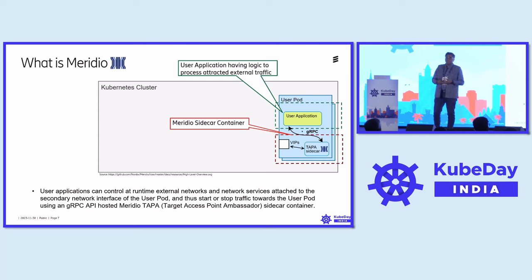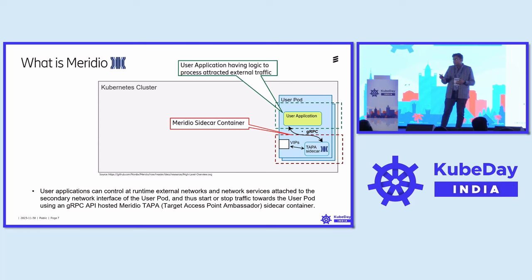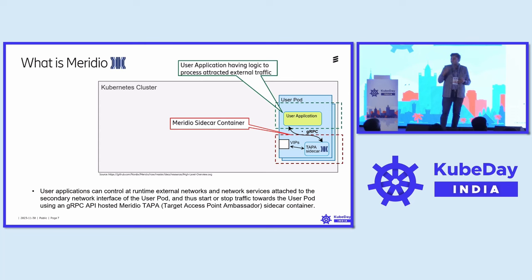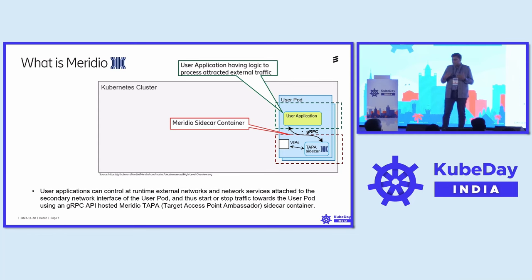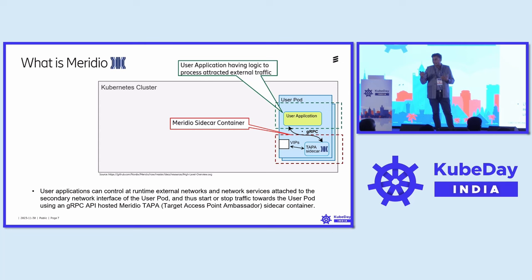Coming back to what Meridio is — as you see, this is a Kubernetes cluster. There is a user application running in a pod. To use Meridio, it provides a sidecar container called a TAPA sidecar container — Target Access Point Ambassador — based on the ambassador design pattern. It provides an interface through which you can control what traffic is coming to your secondary network interface, via a gRPC API hosted as a sidecar container. Your application is in the container, and the Meridio sidecar container provides the gRPC interface to connect to the external world.